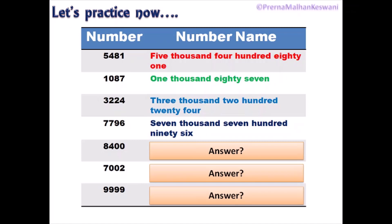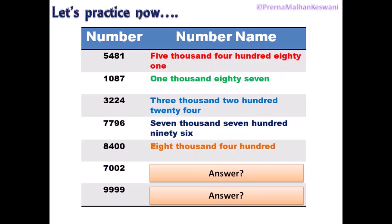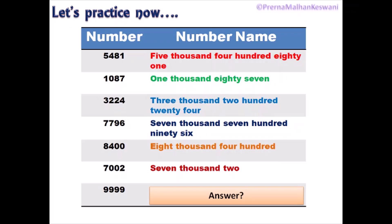Now, all of you try with me, children. Next number is 8,400. Think and try to write the number name on your own. Eight thousand four hundred is the correct answer. Next number is 7,002. Now it's your time to think. Seven thousand and two is the correct answer. The last one is 9,999. Think and tell me the answer. That's right — nine thousand nine hundred and ninety-nine.